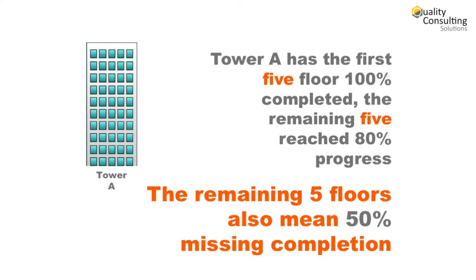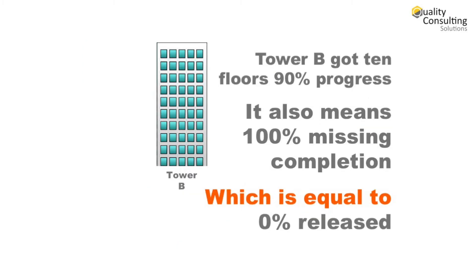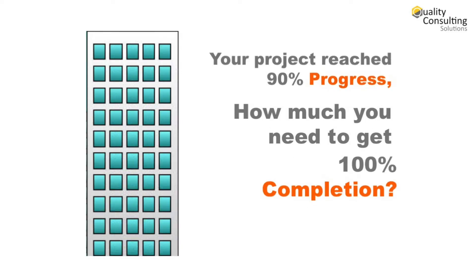That equals 50% completion remaining for the first tower. Then the second tower — there you have no floor already completed, meaning 100% is left. Thus, getting 90% of project progress does not mean 10% missing to completion. There is not an equality, but an equation.